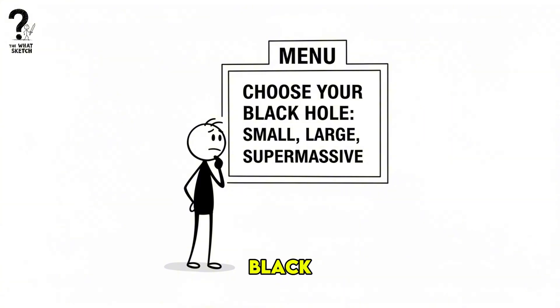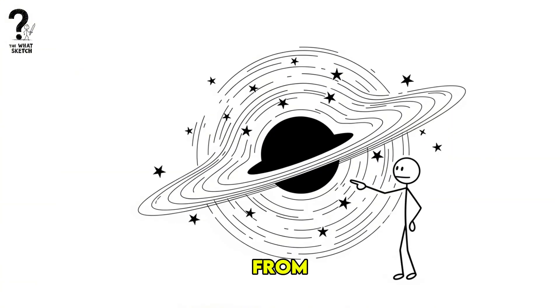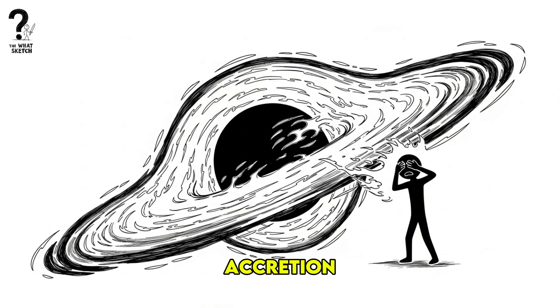First, you need to pick the right kind of black hole. As you approach, light from distant stars would warp around its edge, an effect called gravitational lensing. You'd also see the accretion disk, a chaotic, superheated ring of gas and dust, which is the last thing you'll see of our universe.